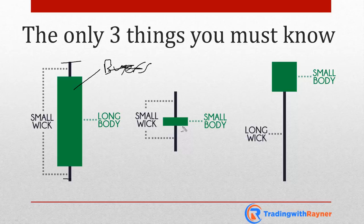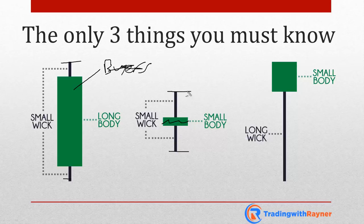The second candle has a small body, so the buyers are not really in control. Looking at the wick to see where price got rejected — it got rejected near both the highs and the lows, and the length of the wicks are pretty much proportionate to one another. So this one is somewhat undecided.